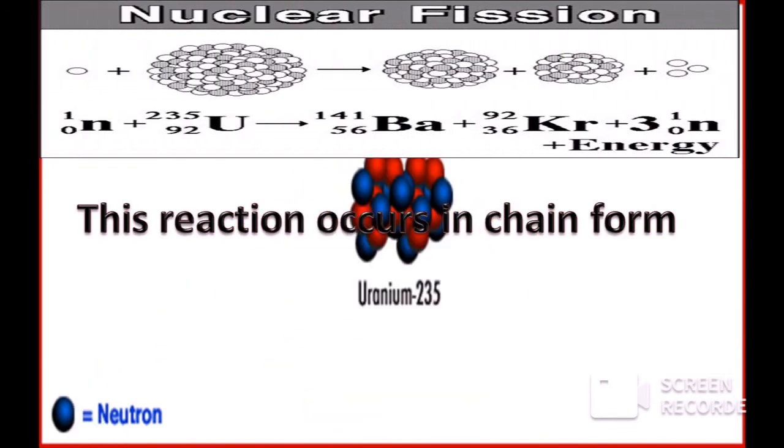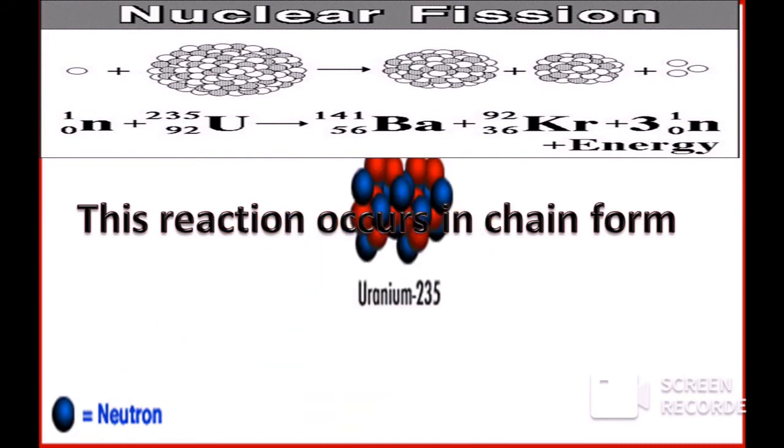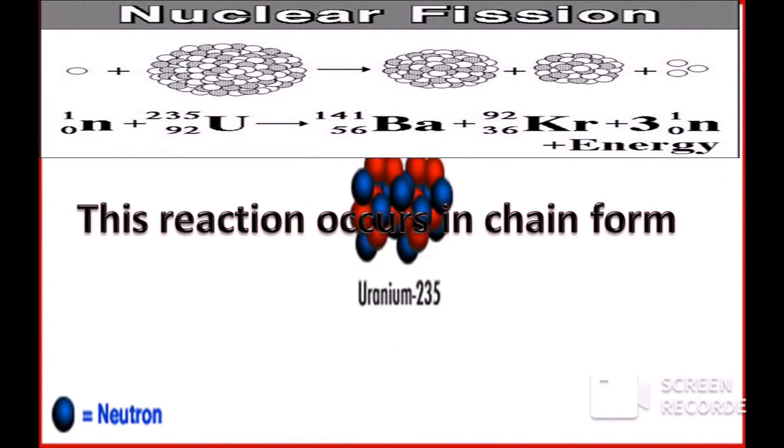When uranium-235 is bombarded with neutron, it gives barium, krypton nucleus, neutrons, and energy.